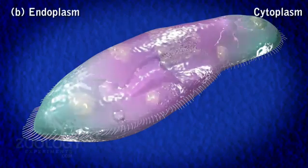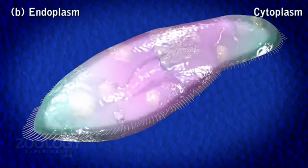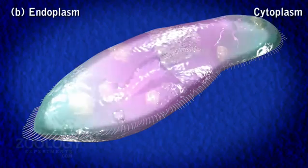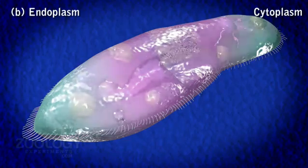It comprises the usual cell components like mitochondria, Golgi bodies, ribosomes, crystals, reserved food granules, etc.